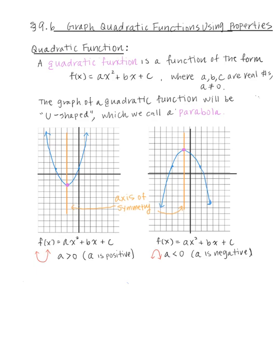For the first graph, the axis of symmetry is x = -2, since that's the x-value where the line goes through. For the second graph, it's x = -1. The very bottom point of an upward parabola and the very top point of a downward parabola are both called the vertex. For a downward parabola, the highest point is the vertex.